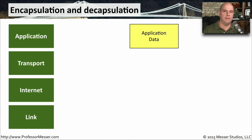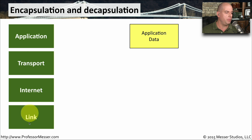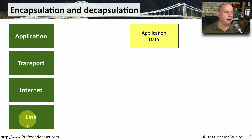One of the key concepts of networking is this idea of encapsulation and decapsulation of your application data. I've got a summary of the different communication layers: there's an application layer, a transport layer, an internet layer, and a link layer. If you're familiar with the TCP/IP model, that corresponds directly back to that model.